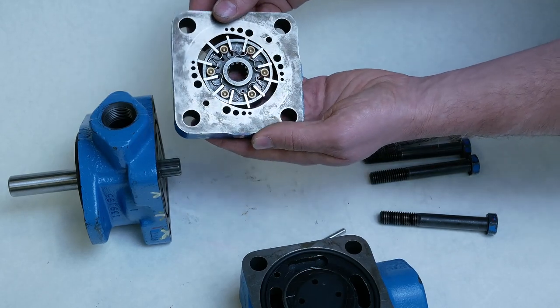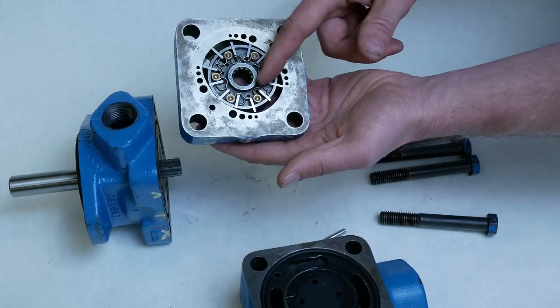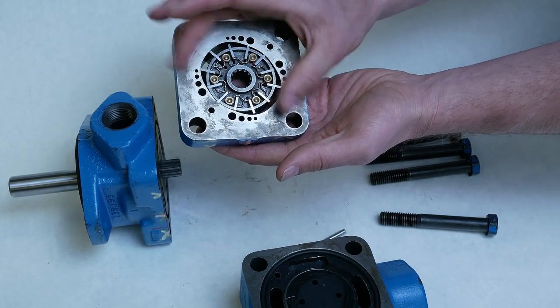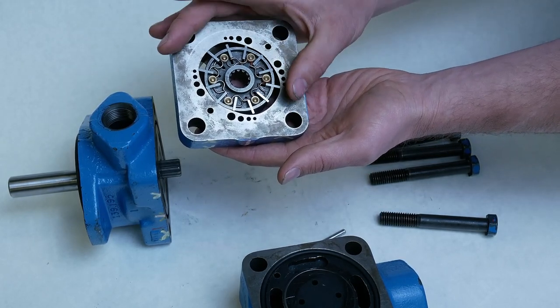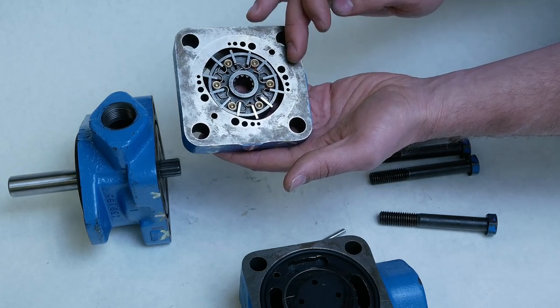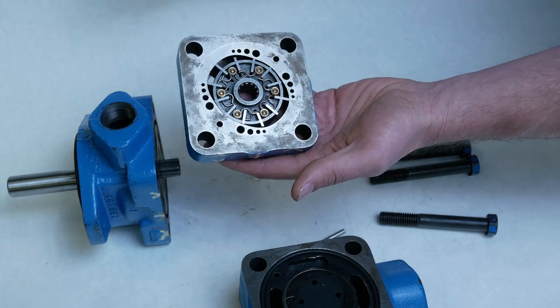So what happens in our pumps is typically our vane pump would require a minimum of RPM, so centrifugal force can throw the vanes out.